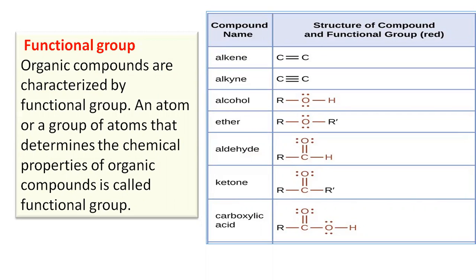Functional group: an atom or group of atoms which determines the chemical properties of an organic compound is called a functional group. For example, alcohol has the formula ROH, where the OH group is the functional group, and the properties of alcohols are determined by the presence of this OH group. Ethers contain the functional group -O- with the general formula ROR, and for aldehydes, the functional group is -CHO.